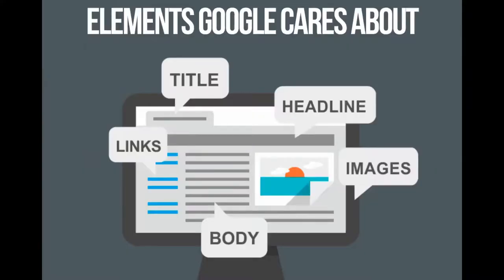Let's talk about the elements Google cares about for optimization or just relevance. If you were writing a term paper or creating a blog post, of course it's going to be about one topic with supporting points. The supporting points are a little different for Google. Take a look at my screen — these are the elements that Google cares about. The first one is the title tag, which shows up in that tab at the top of your browser. It's very important that the keyword be there to start with.